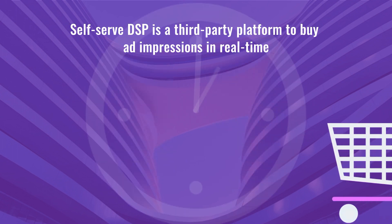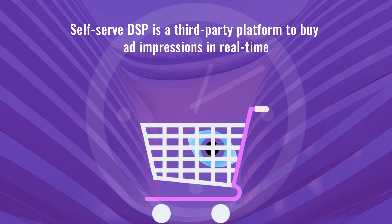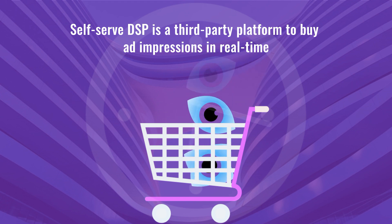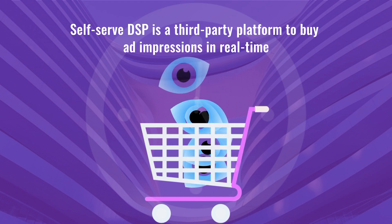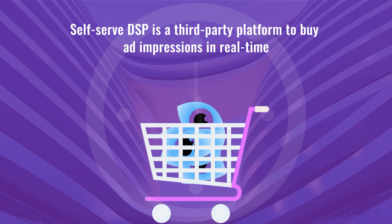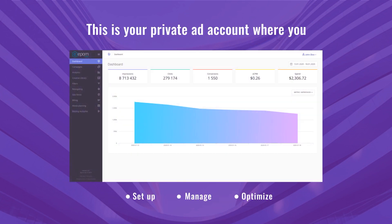A self-serve DSP is a third-party, automatic platform that allows you to buy ad impressions in real-time. It's a platform where users, like advertisers or app developers, promote their products, services, and apps online. In your everyday workflow, a self-serve DSP will look like a private account where you set up, manage, and optimize your branded or performance ad campaigns.